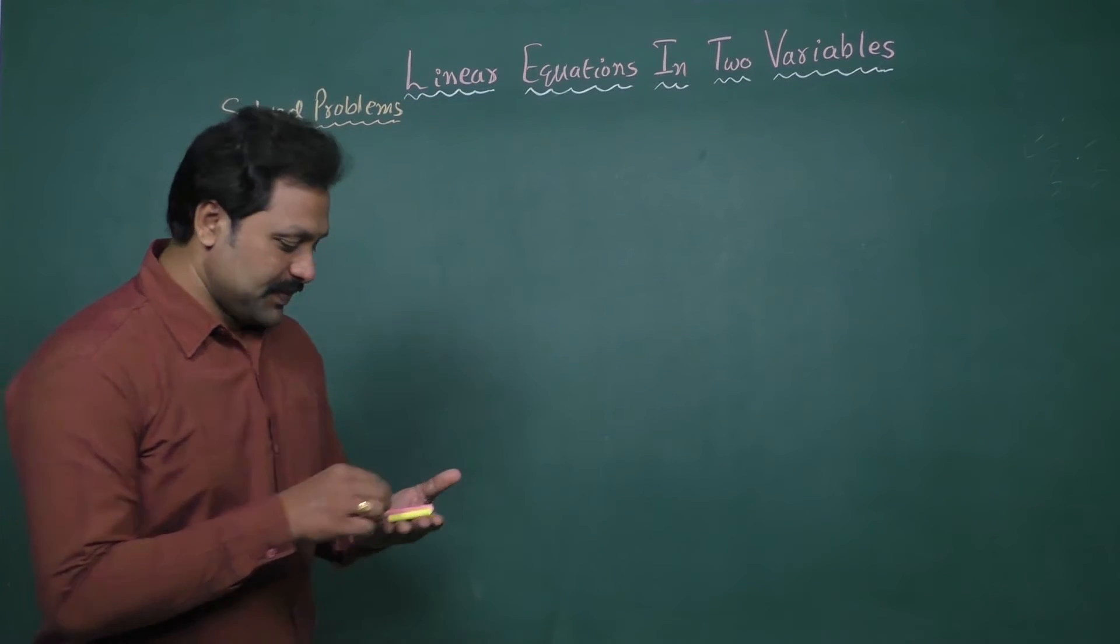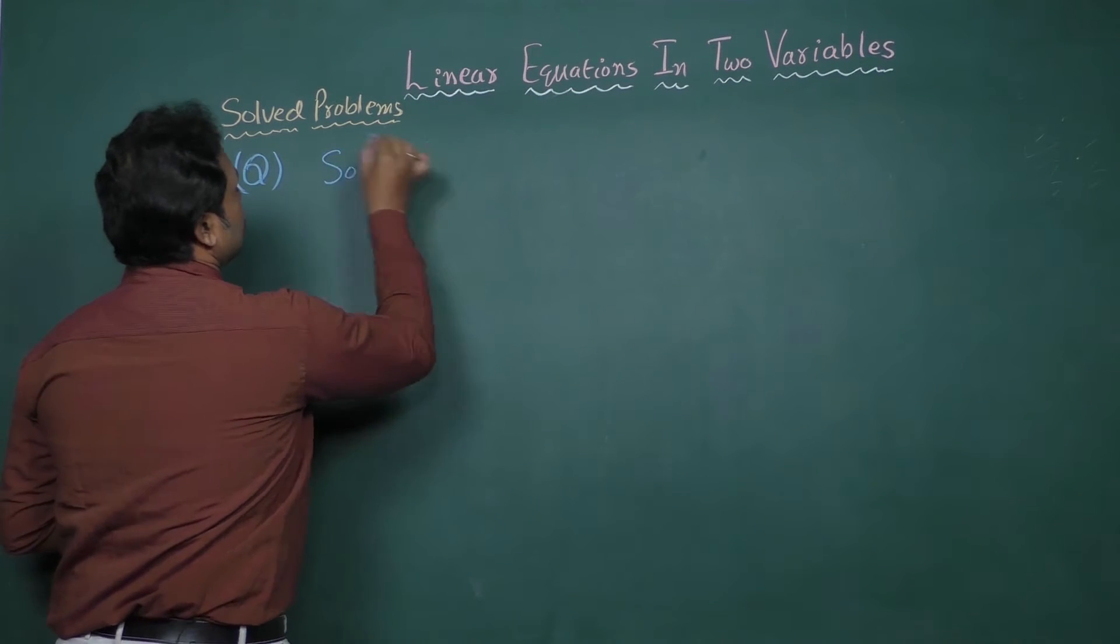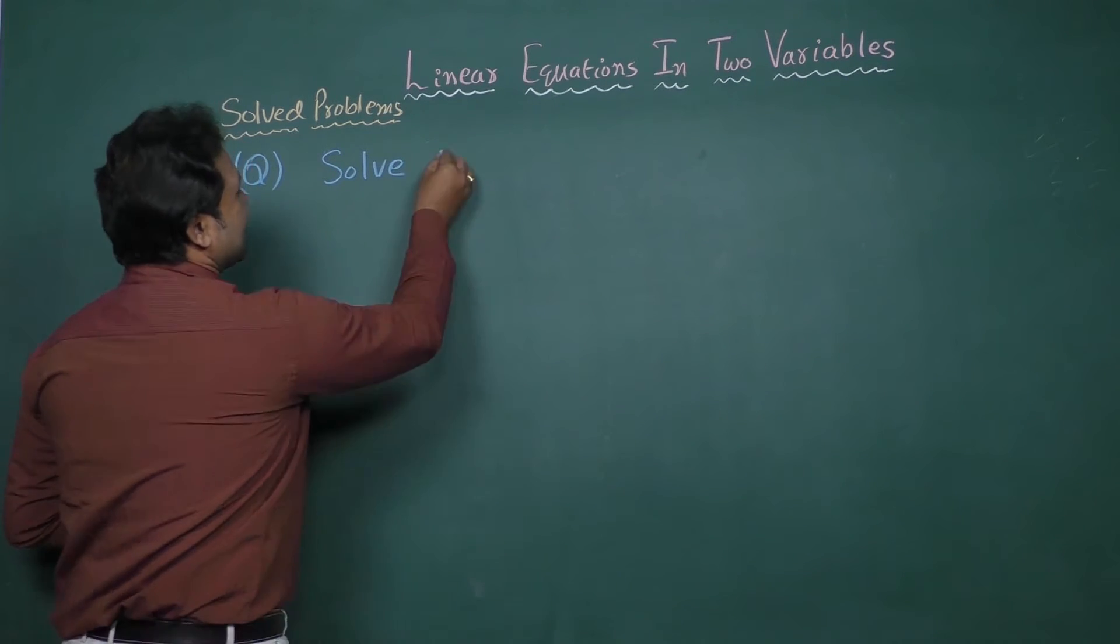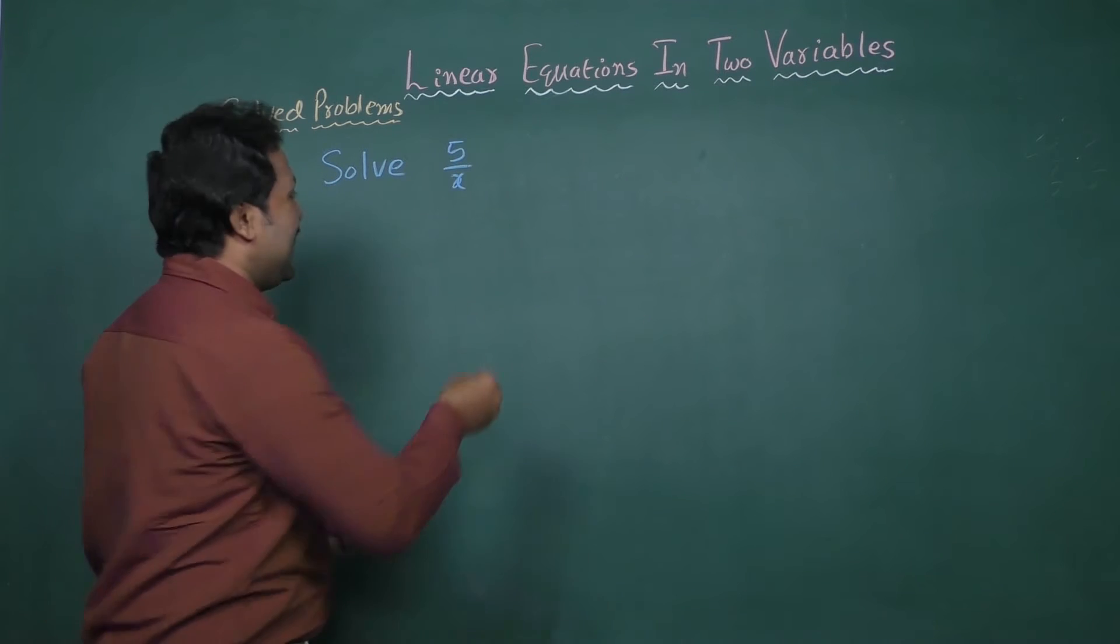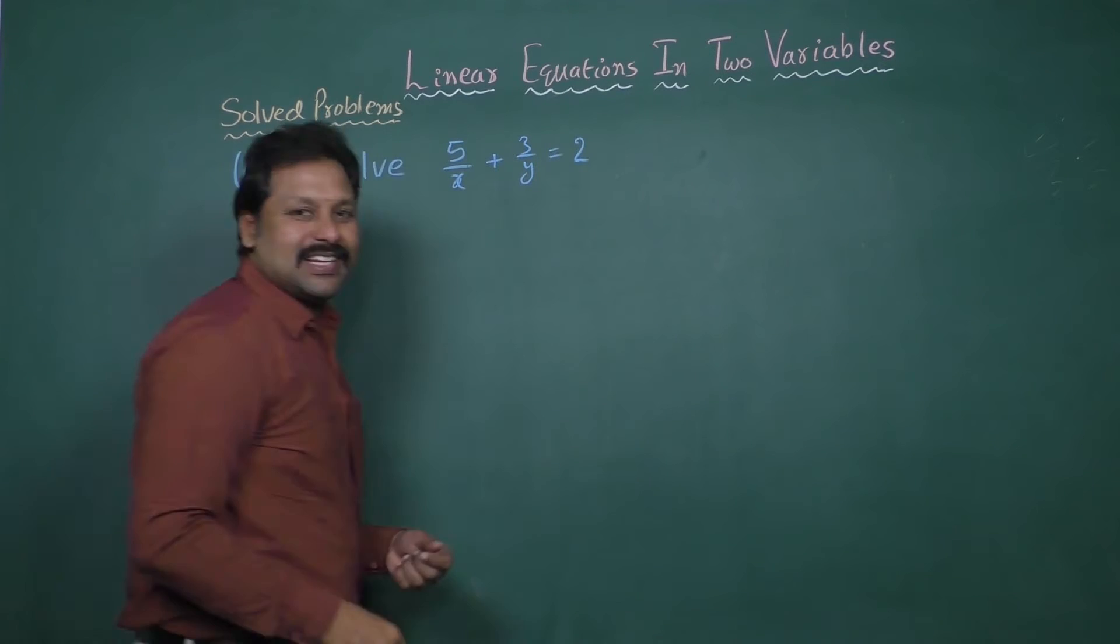The first question is solve 5 by x plus 3 by y equal to 2 and